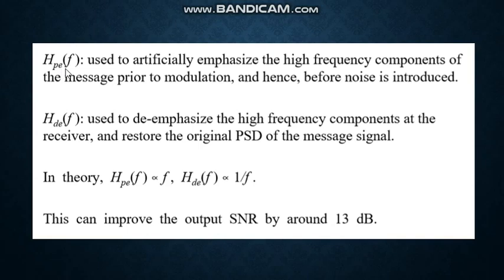H_PE(f) is the transfer function at pre-emphasis and H_DE(f) is the transfer function of de-emphasis. H_PE(f) is used to artificially emphasize the high-frequency components of the message prior to modulation, hence before noise is introduced. Then H_DE(f) is used to de-emphasize the high-frequency components at the receiver and restore the original power spectral density of the message signal. Theoretically, H_PE(f) is directly proportional to f whereas H_DE(f) is inversely proportional to f. This can improve the output SNR by around 13 dB.